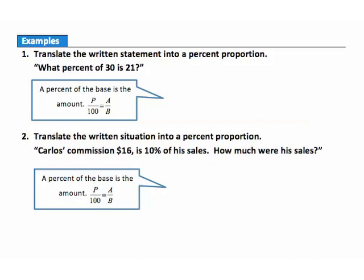Example 1. Translate the written statement into a percent proportion. Here is our written statement: What percent of 30 is 21? We want to put this into our percent proportion. The easiest thing to start with is the percent itself. We know 100 is going here. On the other side we'll have our amount and our base. It says 'what percent,' which indicates we don't know the percent, so that is going to be p, our unknown variable.